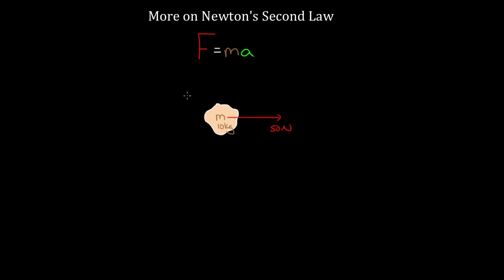But what if we had extra forces on this asteroid? What if there was another force pointing to the left — 30 Newtons? So let's name these: F1 is 50 Newtons to the right, F2 is 30 Newtons to the left. To handle this, we need to understand that the left-hand side isn't just force — it's the net force, or the sum of the forces. We often write this with the Greek letter sigma, which represents the sum of whatever comes after it. So sigma F is the sum of all the forces.